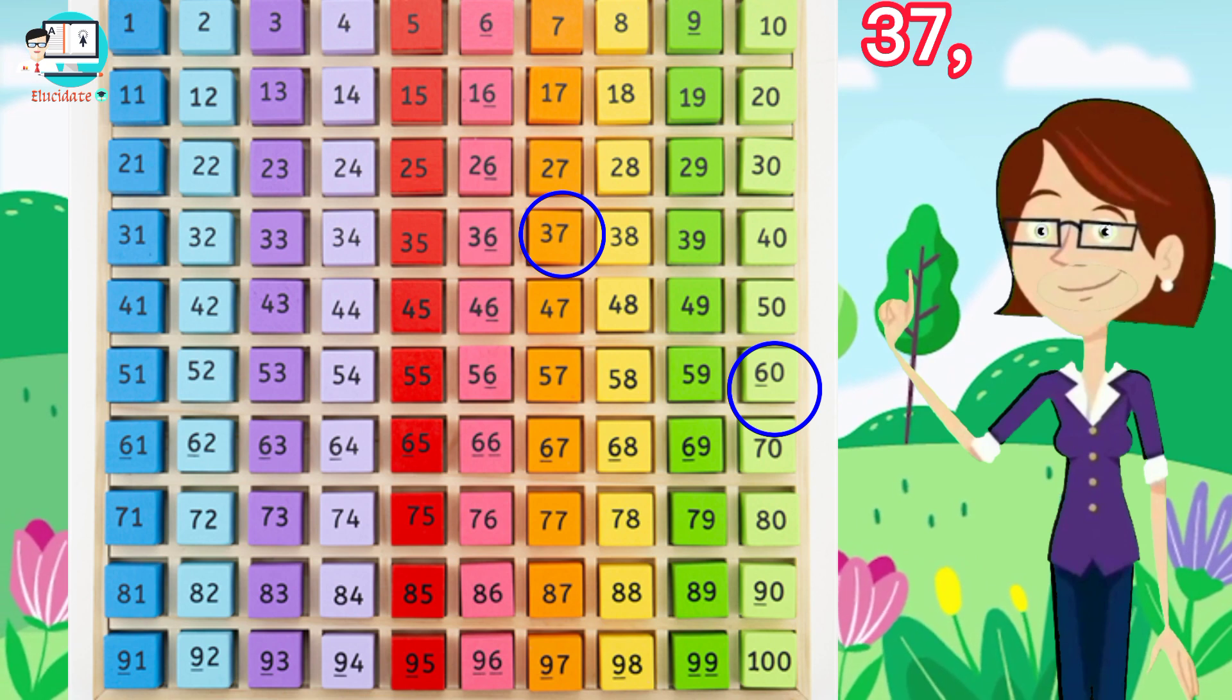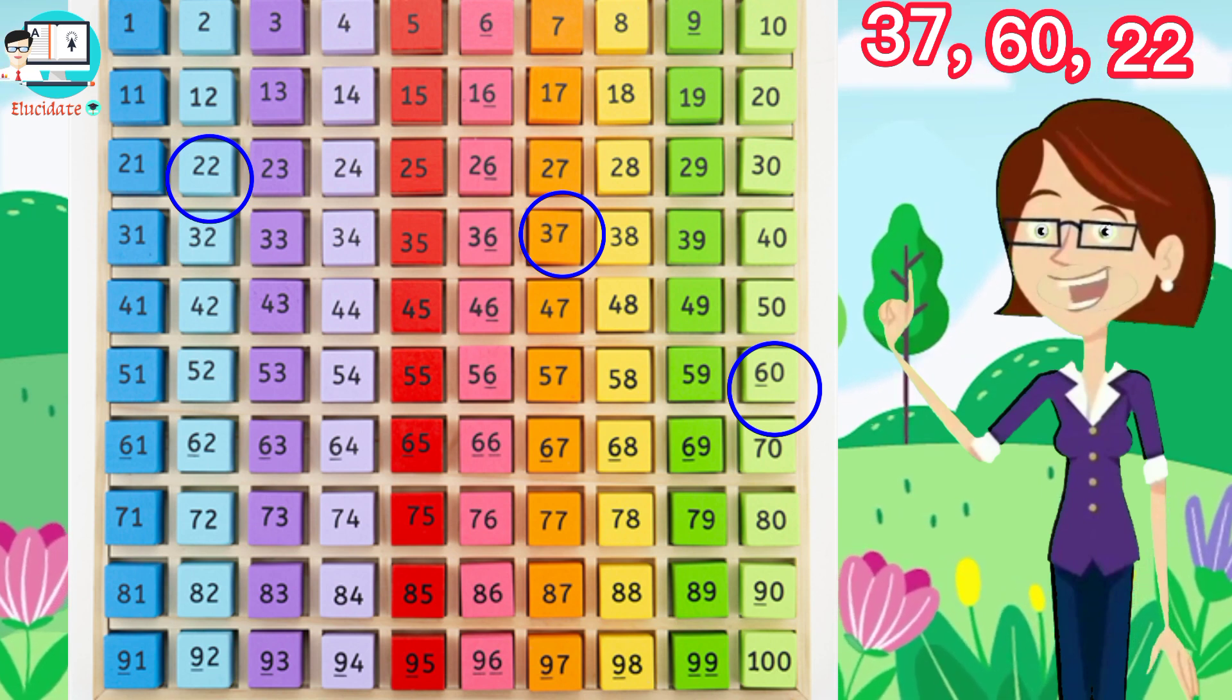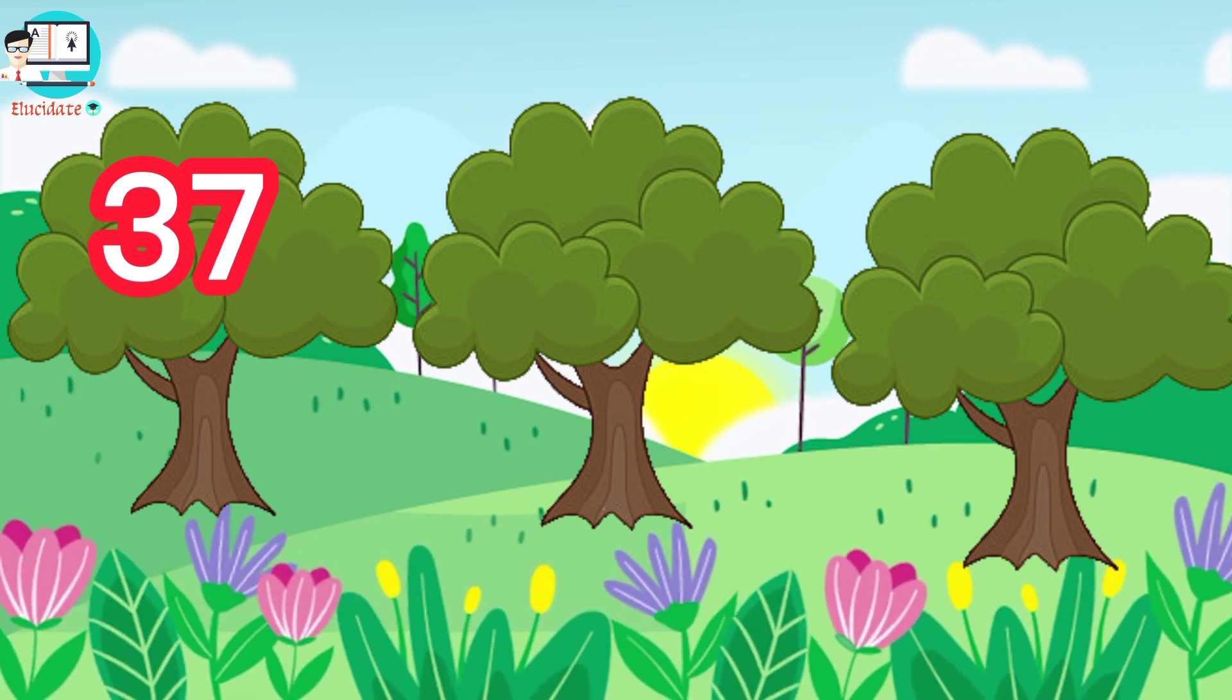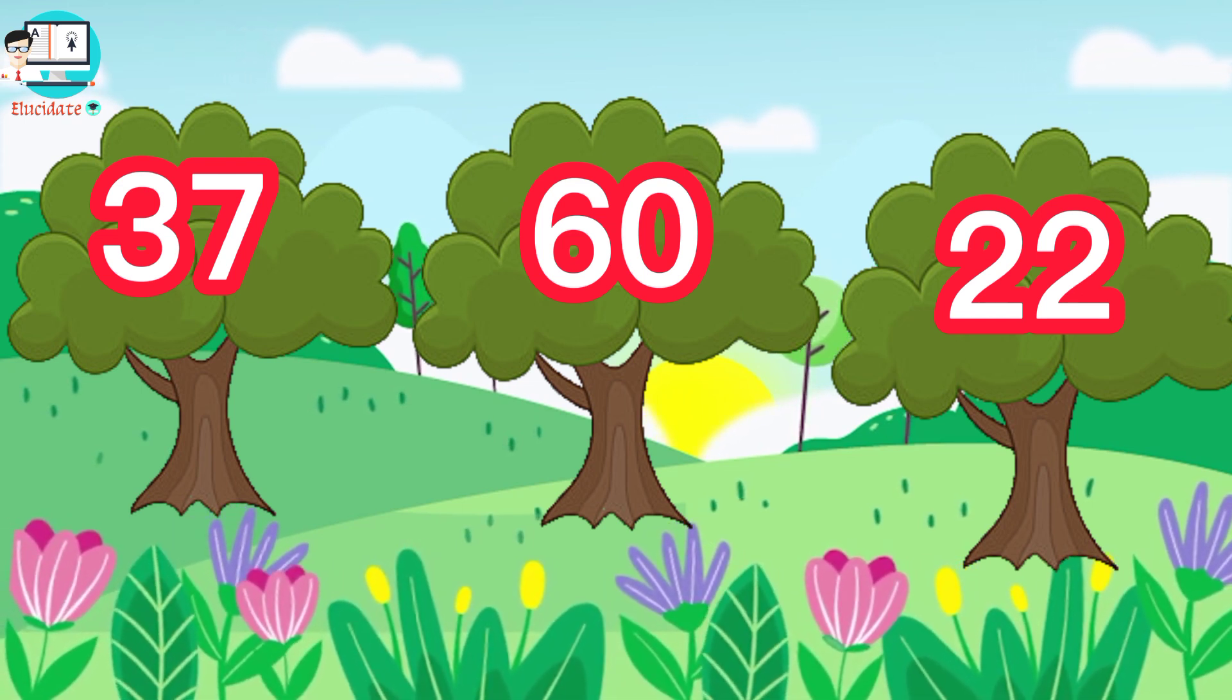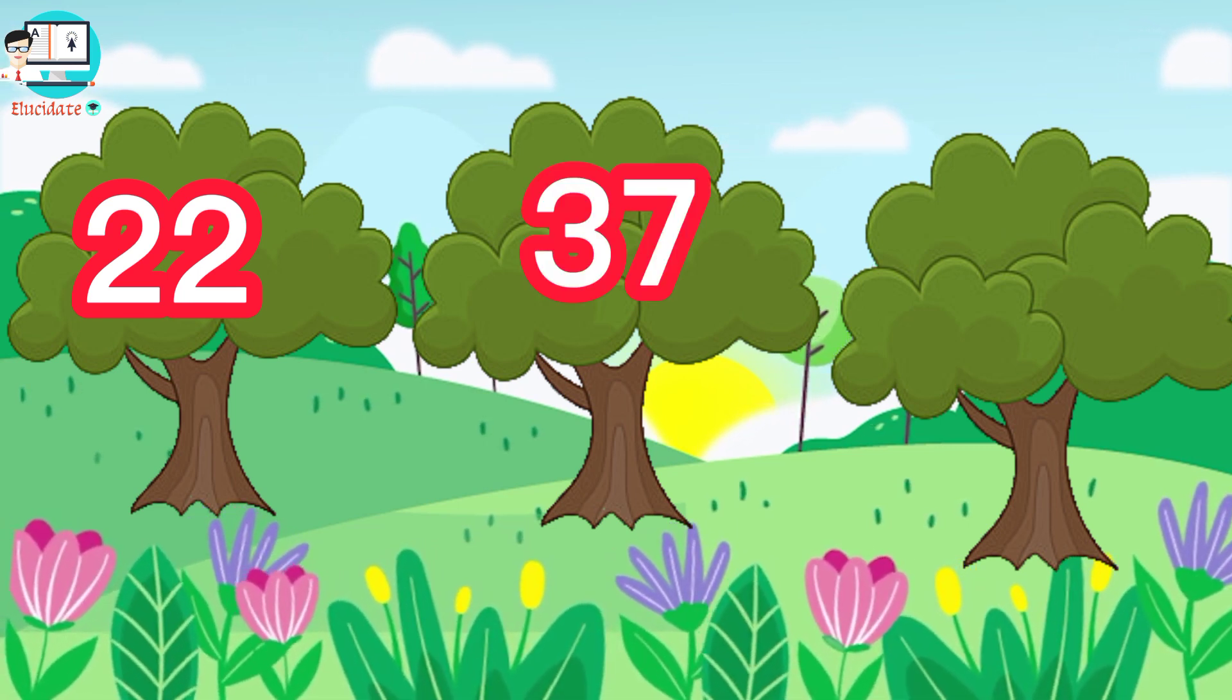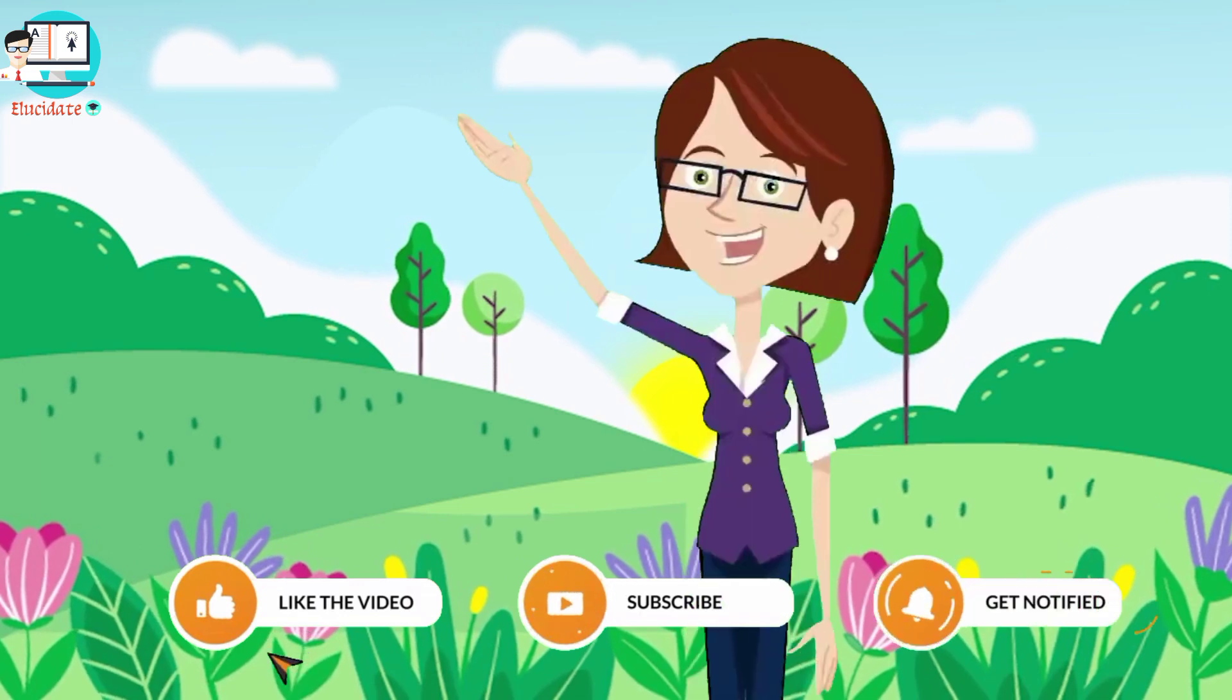So here we have those numbers: 37, 60, and 22. Let's arrange those numbers into ascending order. First comes 22, then 37, and then comes 60. Good job! Hope you like the video.